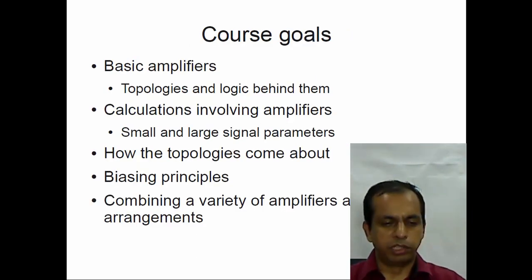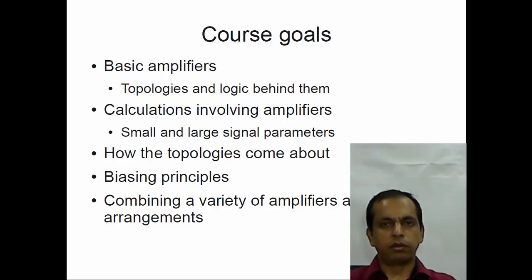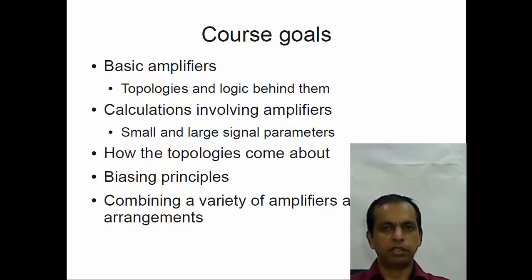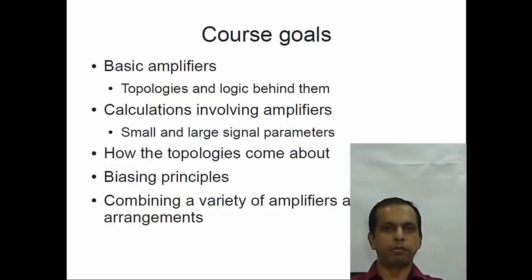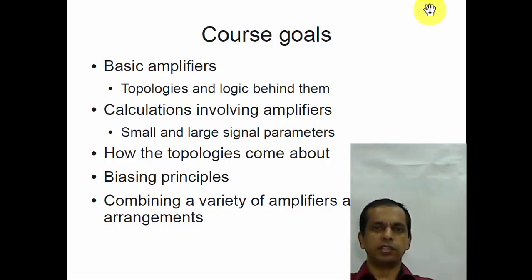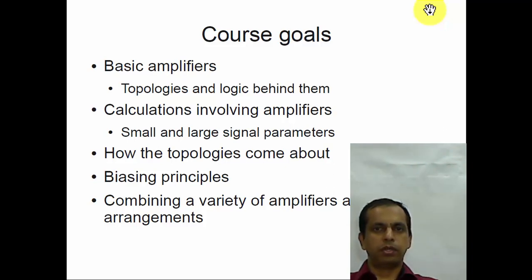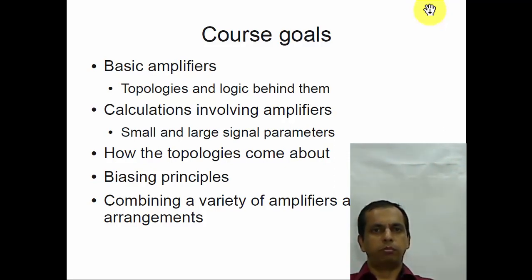The course goals are to understand basic amplifiers — how basic amplifier topologies come about and so on — and to do calculations involving large and small signal conditions. One of the things we try to do in this course is not only tell you that something is an amplifier, but give you the logic of how the topology came about. This is very important because even with a single transistor there is a variety of amplifier topologies, and as the number of transistors increases the number of topologies simply blows up. In order to make sense of any complicated circuitry, you have to understand the logic behind simple building blocks such as single transistor amplifiers. When you look at any circuit, you must break it down into smaller pieces and understand what each piece and the entire circuit is doing.